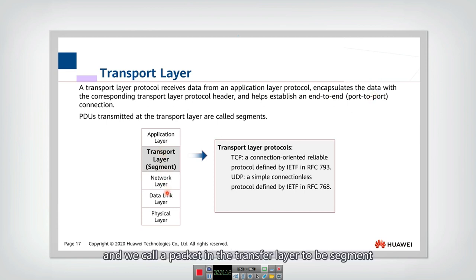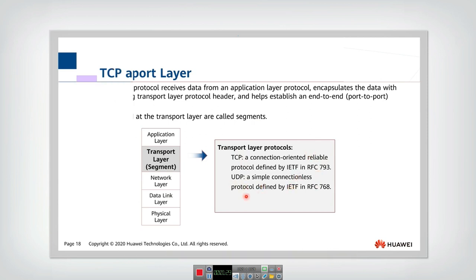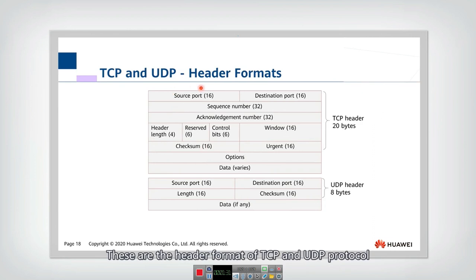The transport layer receives data from the application layer, encapsulates it, and sends it down. We call a packet in the transport layer a segment. There are two typical transport layer protocols: TCP, which provides a reliable transfer protocol, and UDP, which provides a connectionless, unreliable protocol. These are their header formats — TCP has more fields because it provides more functions.